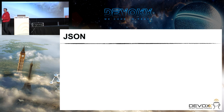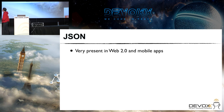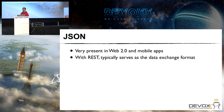I'm not going to insult you with a reminder about JSON — who is not using JSON or has not used JSON on projects here? So just a small minority. JSON is now ubiquitous. It's very present, especially since the rise of Web 2.0 and mobile apps. The fact that it's understood natively in web browsers helps a lot. It's also typically used as the data exchange format for RESTful architectures.